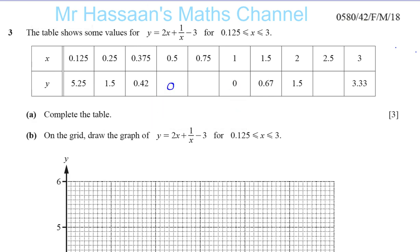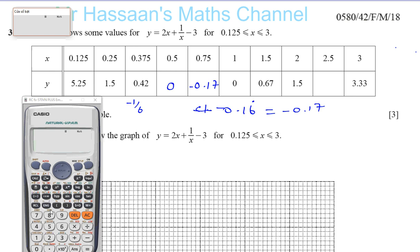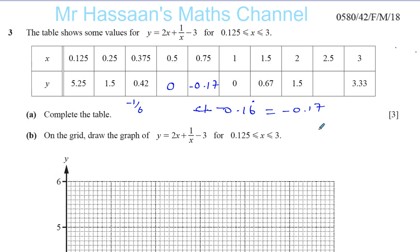Which gives you minus 0.16 recurring, which is minus 1 over 6, which is minus 0.16 recurring, which gives you minus 0.17 to 2 decimal places as I want here. So negative 0.17, everything's in 2 decimal places. And then you put 2.5 into the same formula, and we get out, 2 times 2.5 plus 1 over 2.5, and minus 3. That gives you 12 over 5, which is 2.4. So we get 2.4 for the last value here.